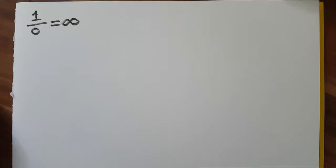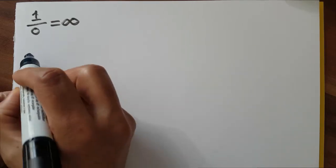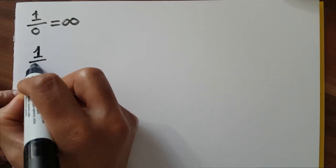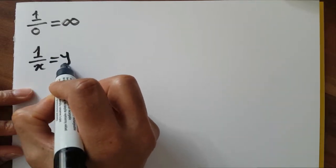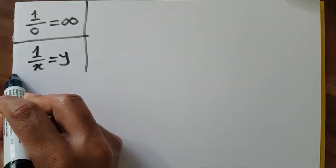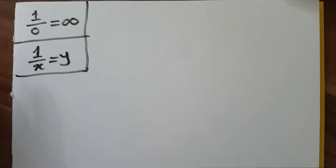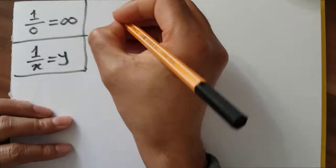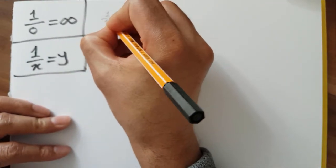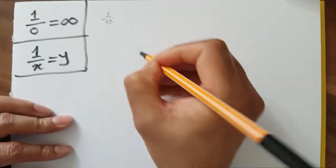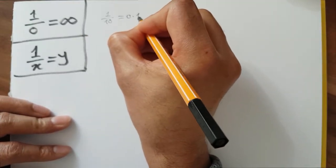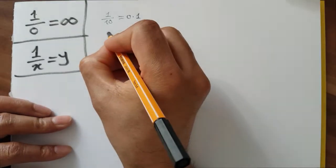Before going to the explanation, let's consider an equation: 1 over x is equal to y. For this moment, forget these two things. Let's consider 1 over 10 — 1 over 10 is equal to 0.1.